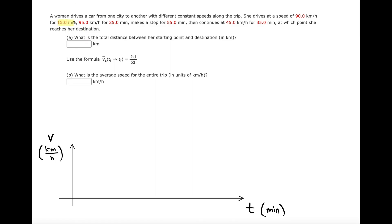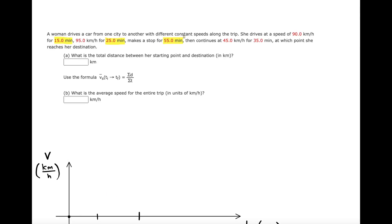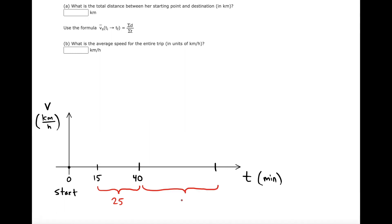The first segment of her trip lasts for 15 minutes, starting at zero. The next leg lasts 25 minutes, so adding 15 plus 25 gives a clock reading of 40 minutes from the start. For her third interval, she's going to be at rest for 55 total minutes.